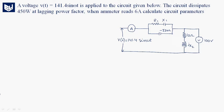Hi guys, today our question is: a voltage V(t) = 141.4 sin(ωt) is applied to a circuit. The circuit dissipates 450 watts at a lagging power factor. When the ammeter reads 6 amps, calculate the circuit parameters.